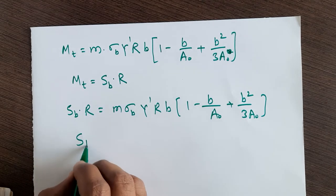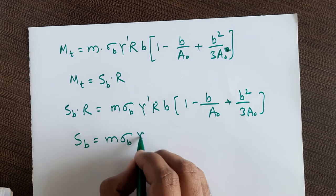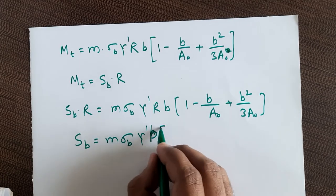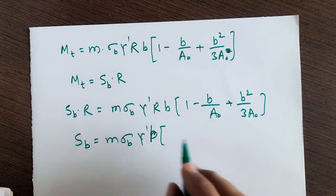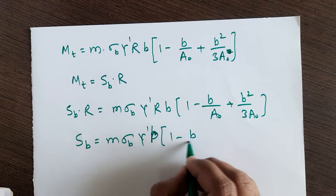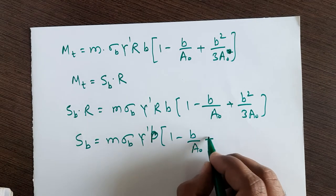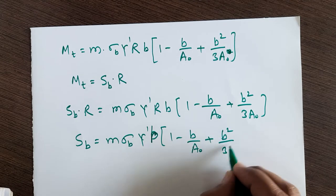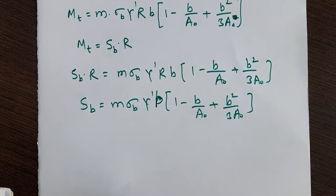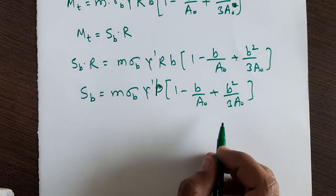Here r and r cancel, so you get: Sb = m·σb·y'·b·(1 - b/a₀ + b²/(3a₀)). This is the simplified beam strength equation. Now, the face width of the bevel gear is limited to one-third of the cone distance.